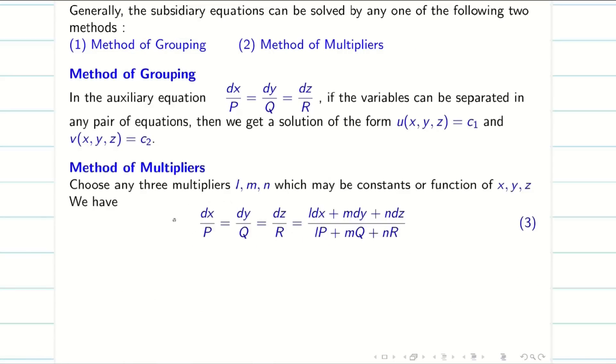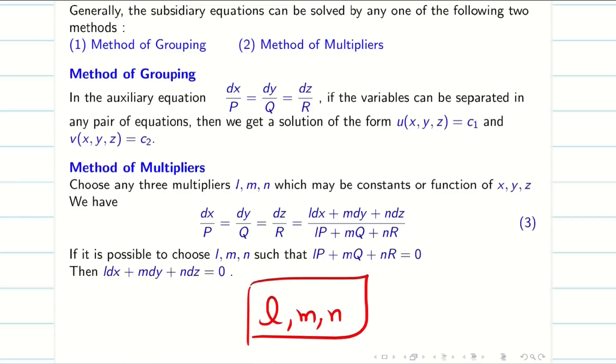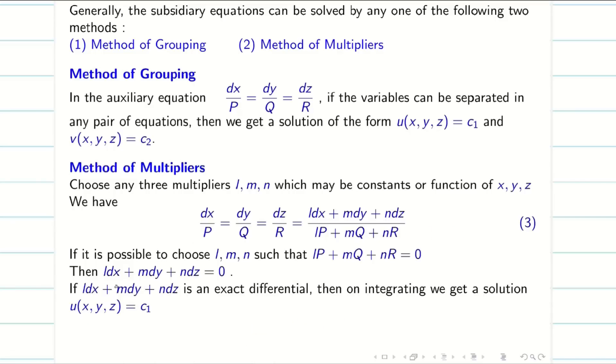In the method of multipliers, I multiply and divide the subsidiary equation by L, M, and N respectively, where L, M, N are my multipliers. Adding the numerator and denominator, we get (L dx + M dy + N dz)/(LP + MQ + NR). We have to choose L, M, N wisely such that the denominator value gets zero. If this is zero, then L dx + M dy + N dz = 0. If this is an exact differential, then integrating gives us the answer u.